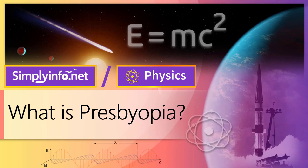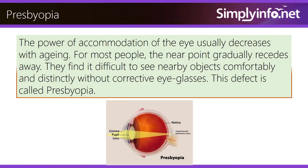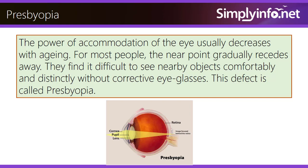What is presbyopia? The power of accommodation of the eye usually decreases with aging. For most people, the near point gradually recedes away — they find it difficult to see nearby objects comfortably and distinctly without corrective eyeglasses. This defect is called presbyopia.